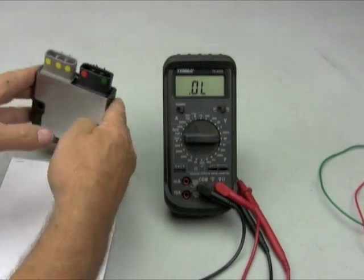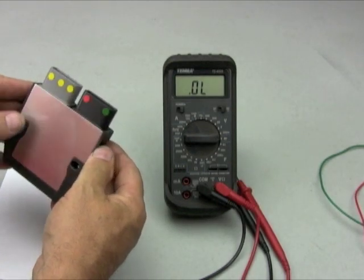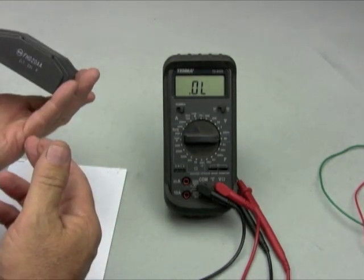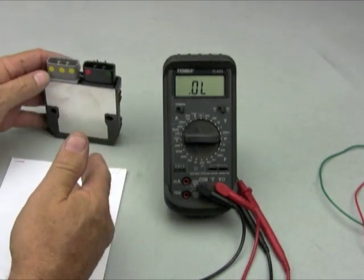Hi, I'm Jack from RotorCycle.com. Today I'm going to show you how to check out your MOSFET. It's an FH020AA Shindigen MOSFET regulator.